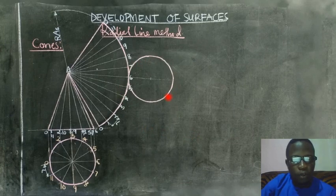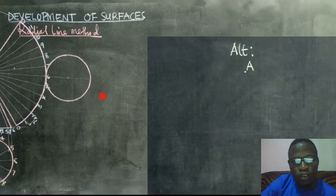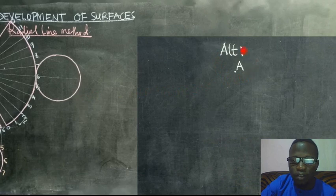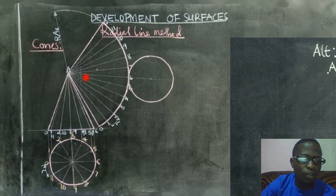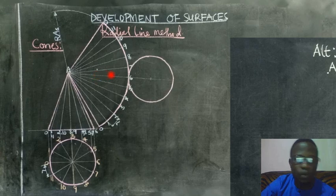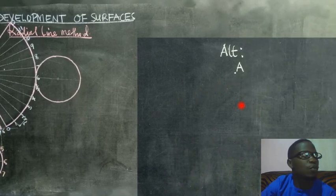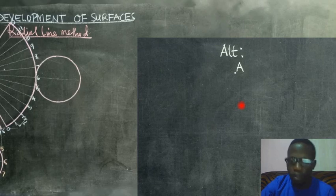Now alternatively you can choose to put that development away from the drawing itself because sometimes we can run out of space and want to make the development. So we are going to transfer the dimensions from the drawing we have here to the space where we need to draw the development.